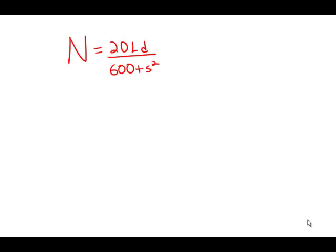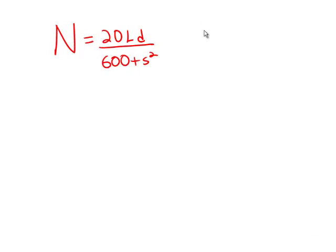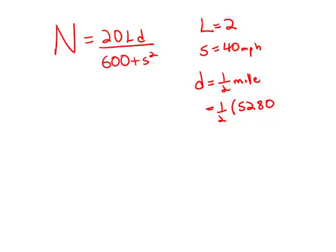That's very important. So first, the values: number of lanes is two, speed is 40 miles per hour. The length of this stretch of highway, D, is half a mile, but we need this in feet. They tell us that one mile is 5,280 feet.